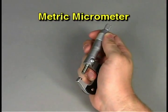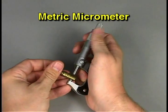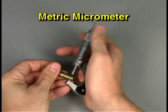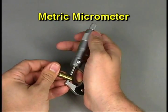When measuring parts with a metric micrometer, the procedure will be similar to using an inch micrometer. However, the resulting measurements will look quite different.